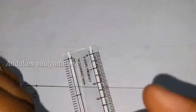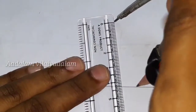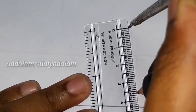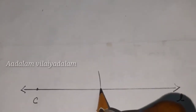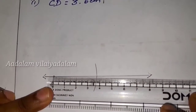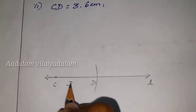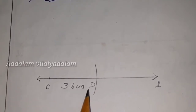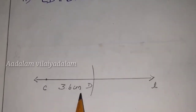Now using the compass to measure the value 3.6 cm. Place the pointer of the compass at 0, then at 3.6. Now place the pointer of the compass at C and make a small arc to get the point D. The distance between C and D is 3.6 cm. Therefore CD is the required line of length 3.6 cm.